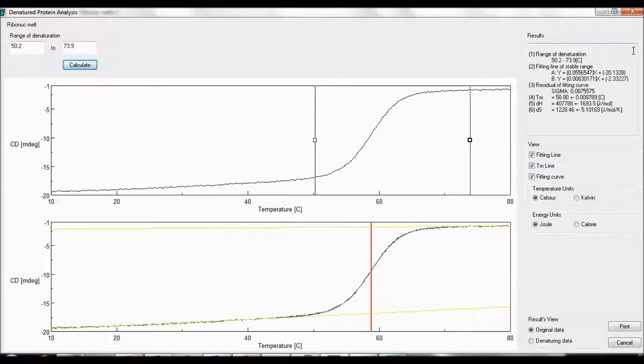The results of the denatured protein analysis are shown to the right. The range of denaturation are the temperatures specified earlier. The fitting line of the stable range are the parameters for the approximation curve where the CD values change linearly.